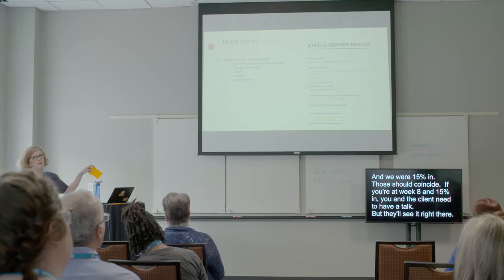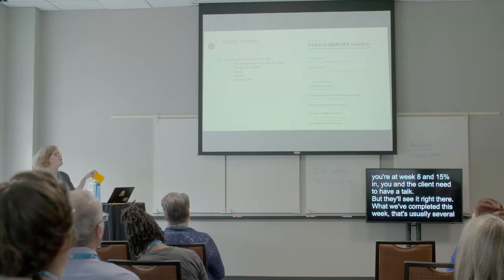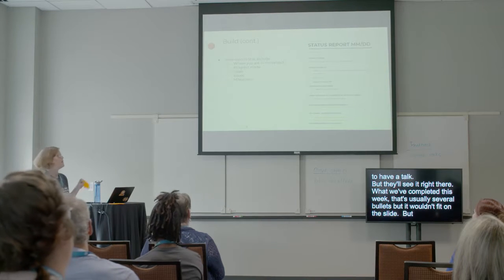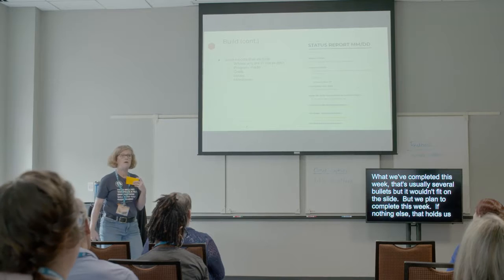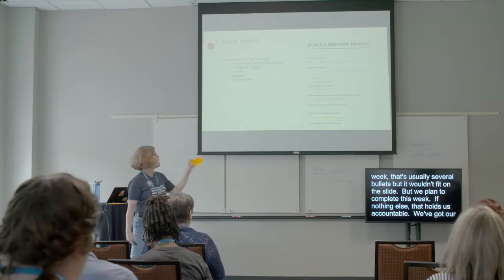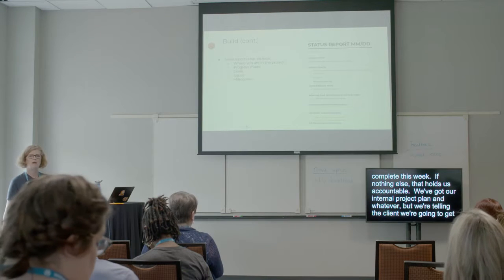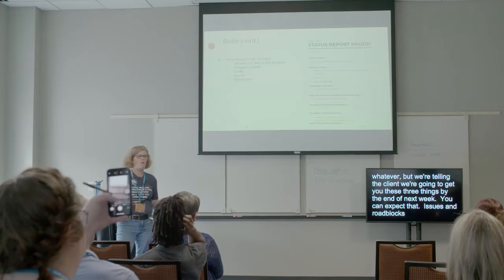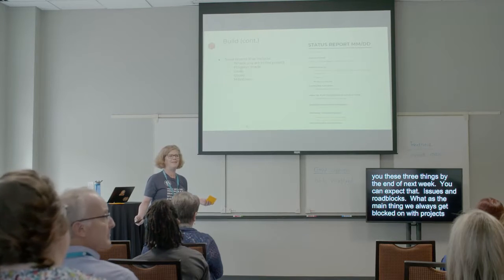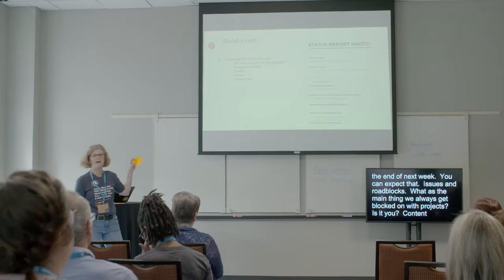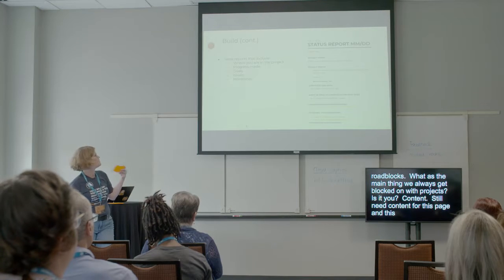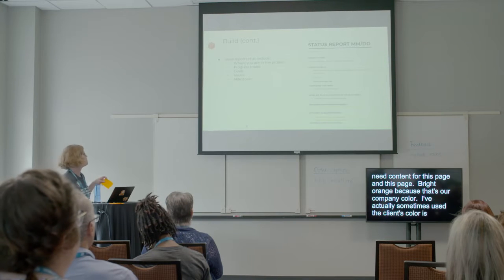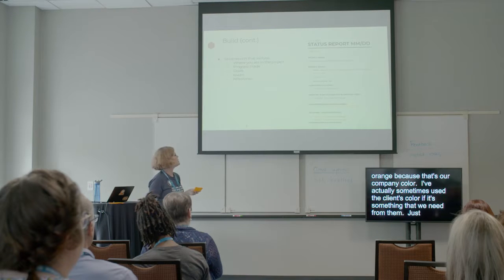What we've completed this week. That's usually several bullets. What we plan to complete this week. If nothing else, that holds us accountable. We've got our internal project plan and whatever. But we're telling the client, we're gonna get you these three things by the end of next week. You can expect that. Issues and roadblocks. What's the main thing that we always get blocked on with projects? What holds your project up? Is it you? Content. Still need content for this page and this page. Bright orange. Cause that's our company color. I've actually sometimes used a client's color. If it's something that they're due. That we need from them. Just another couple upcoming tasks and milestones. And then, I'm trying to avoid talking about tools. But I've linked to our project management tool. So they can be reminded of the full milestones and where we stand. And giving them links to it. Toward the end, I also give them links to the staging site on the bottom of that.